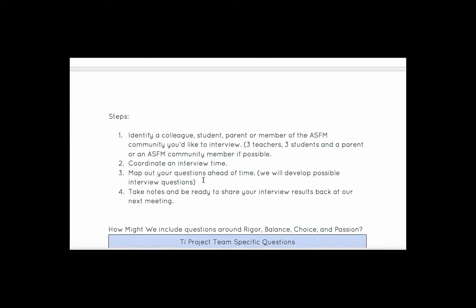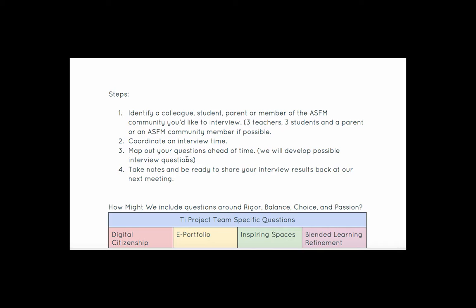Here are the steps clearly defined. First, you're going to identify a colleague, a student, a parent, or a member of ASFM that you'd like to interview. We're recommending three teachers, three students, and a parent or community member. You could also add an admin, but we're not mandating this — it's up to you who you want to interview and how many. Make sure you map your questions out ahead of time, but these interviews can be organic, and that's the whole purpose. You're not sure where they might go because asking a why question or a follow-up might take you somewhere different. Take notes, and be ready the next time we meet — which is in November — to bring these notes back to your team, because we're going to do an activity where we share out discoveries from our different interviews.